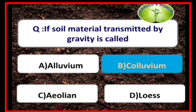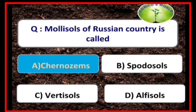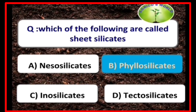If soil material is transported by gravity, it is called colluvium. The smallest volume of soil is called a pedon. Mollisols of Russia are called Chernozems. Quartzite is the mineral that is highly resistant to weathering. Phyllosilicates are called sheet silicates.